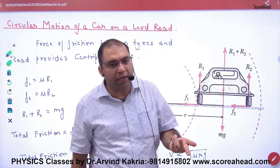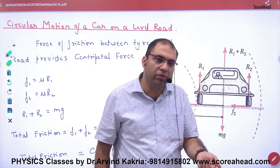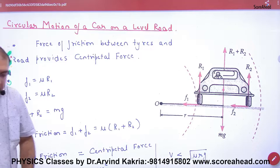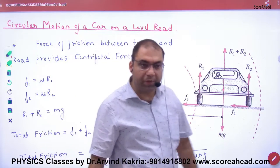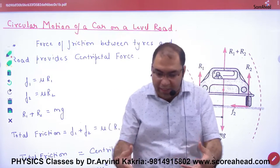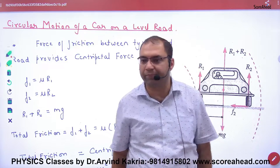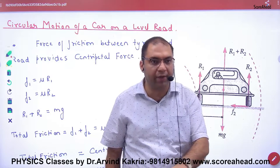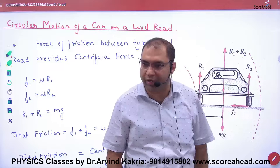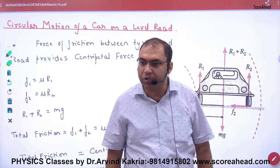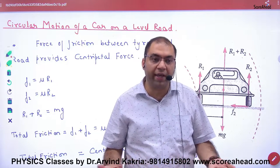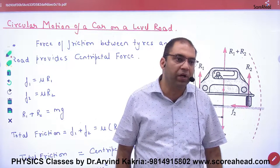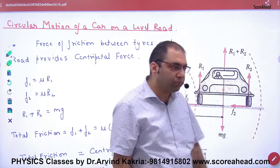If we don't bank the road, which force keeps the car in the circle? Friction. Friction. There are two things: one is banking, and the other is friction. On a level road, friction acts towards the center. If you look at roundabouts — especially in Chandigarh — they use different materials on the road surface, like rubber. Why? Because the car tends to go straight. Friction saves it. So high-friction material is used so the car does not slip.